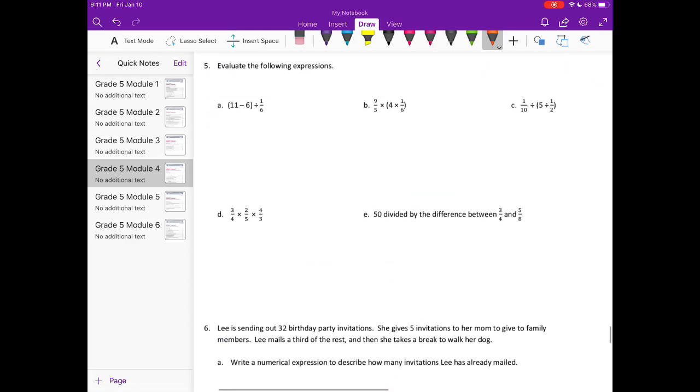Number 5, evaluate the following expressions. 11 minus 6 divided by 1 1 6th. So let's start with what's in the parentheses. So we have 11 minus 6, that would be equal to 5. So we have 5 divided by 1 6th. Now remember, we were doing the tape diagram, so what we could do is draw 5 tape diagrams. And if I split them all into 6, I'll have, if I count all of those up, I'll have 30 pieces, so it's equal to 30.